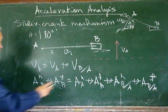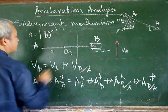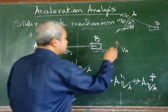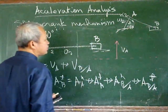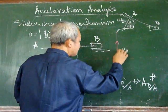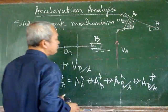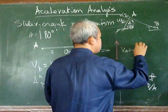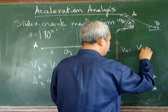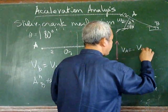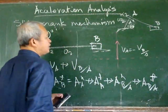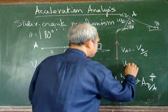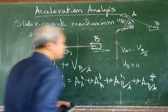The velocity of B with respect to A has to be perpendicular to AB, and we can draw that starting from the tip of the velocity of A vector. Along the horizontal direction, there is an intersection, and so it gives us a certain magnitude. The velocity of B with respect to A is just equal in magnitude but negative to the velocity of A, and the velocity of B is equal to zero.